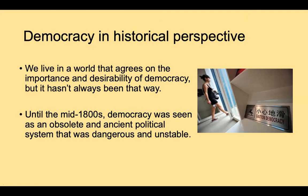We live in a world that largely agrees on the importance and desirability of democratic regimes, but it hasn't always been this way. Until about the mid-1800s, democracy was seen as obsolete — untenable, dangerous, and unstable. It was viewed with suspicion, primarily by elites, intellectuals, and thinkers. The view was that democracy did not support the kind of politics that was desirable.